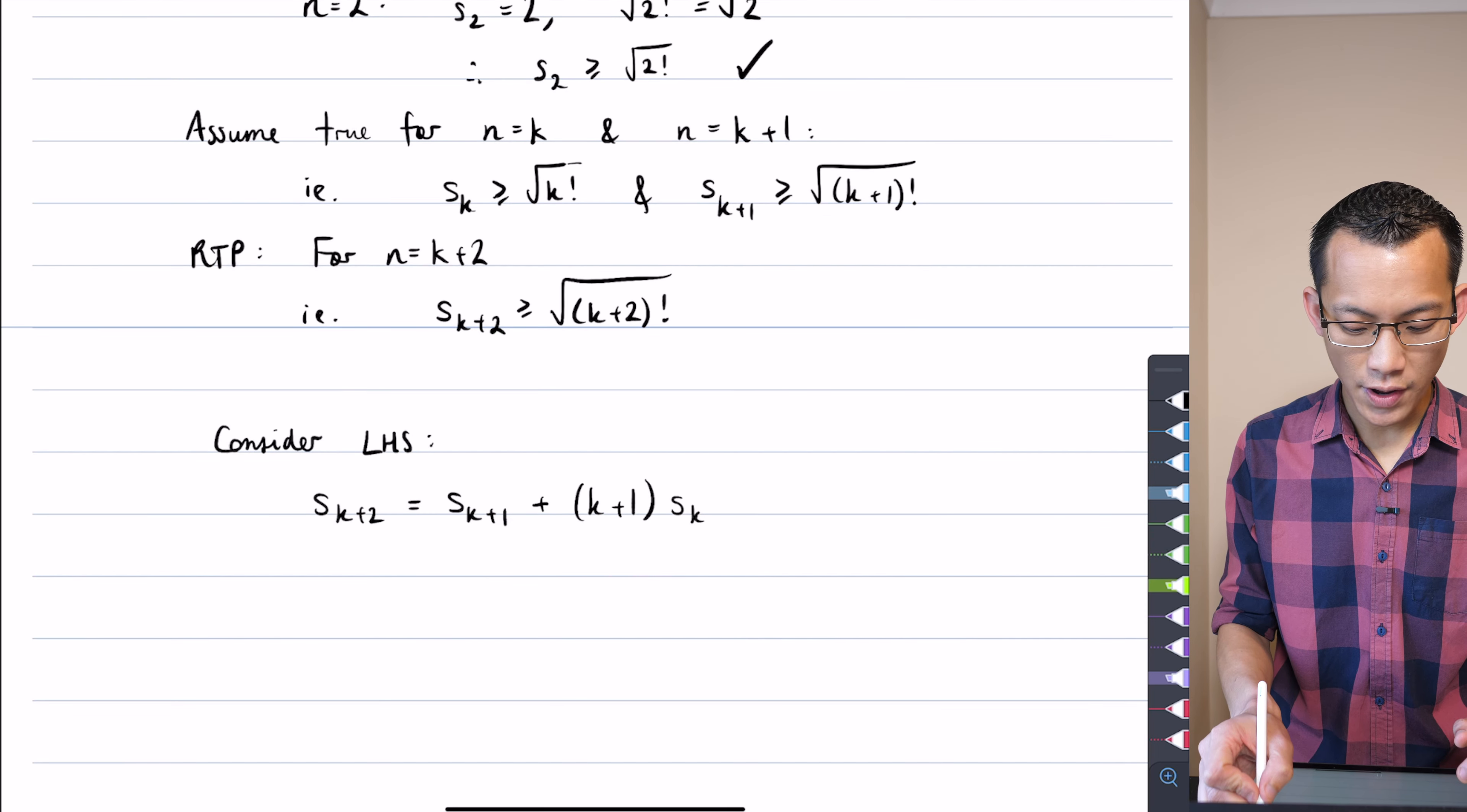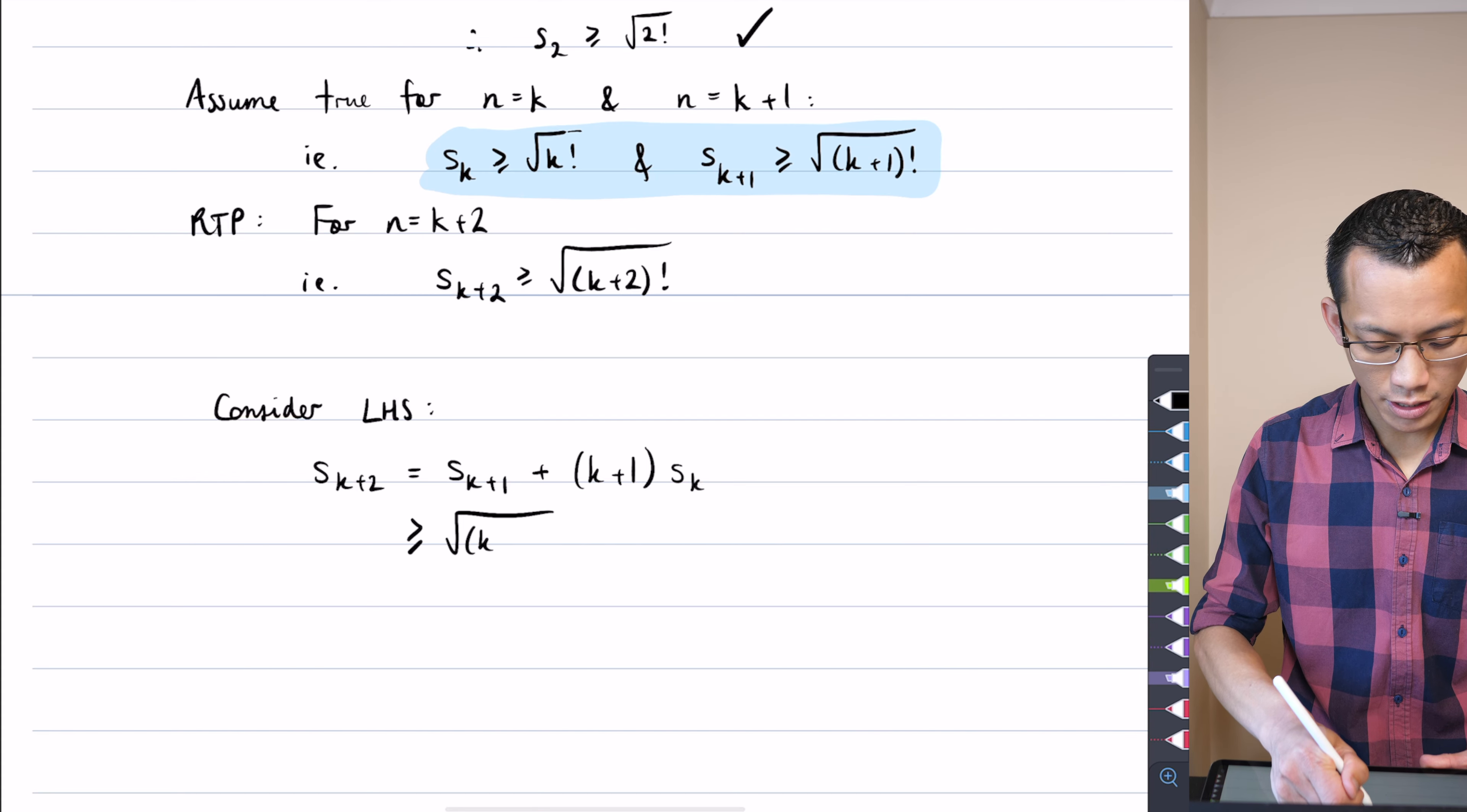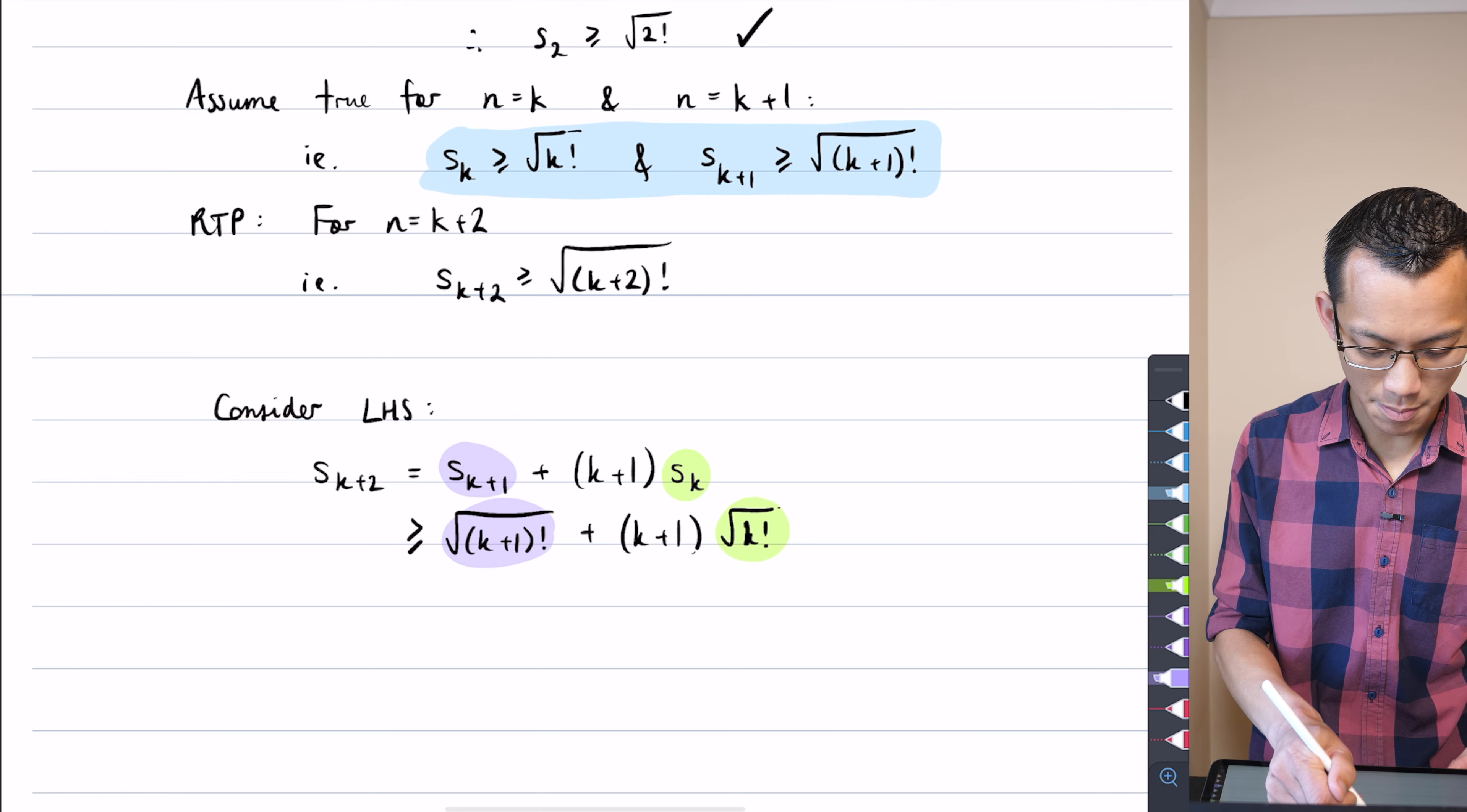Now, based on the inductive hypothesis right here, and I'll just highlight it just to make it very obvious, what I can do is I can replace my s k and my s k plus 1 with something smaller, these square roots of factorials. So since I'm replacing it with something smaller, I'll pop in the greater than or equal to sign. Here comes this term, and then I've got a k plus 1, and then this term here. So that's why the inequality is preserved. So I'll just highlight those, that's the comparison that I'm making.